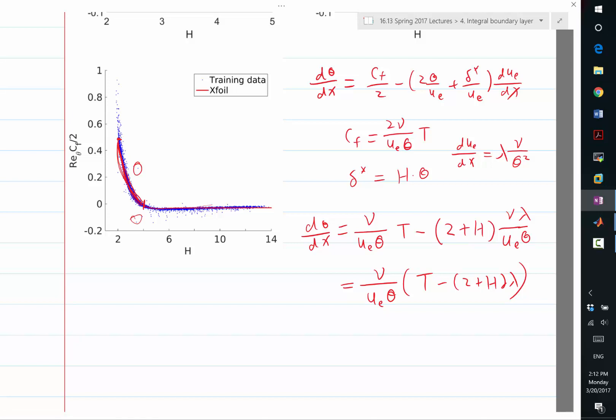Okay. And, basically, here, lambda is the input, right? Because I know d ue dx, I know theta, right? So, I can calculate lambda being d ue dx times theta squared over nu, given any theta as input, theta and ue and x. So, and I want to compute this whole quantity here.